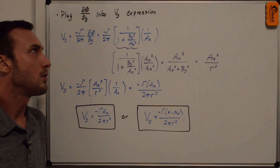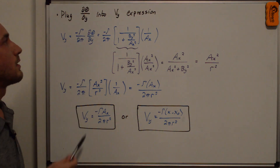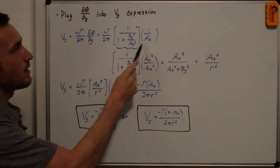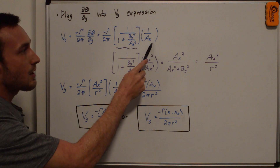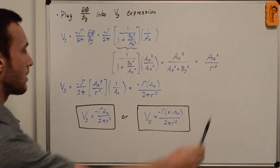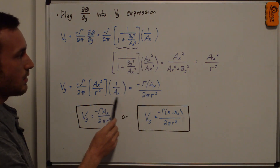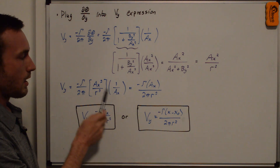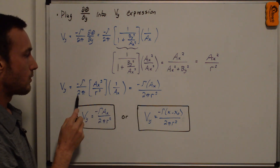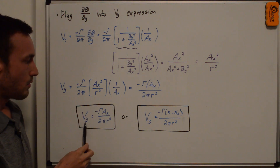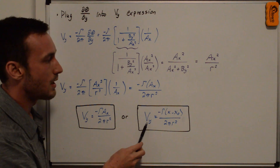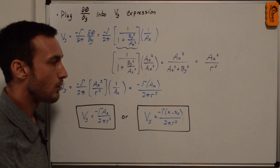Now we do the same to solve for vy by plugging in d(theta)/dy. We have negative gamma over 2 pi times d(theta)/dy. The only difference is that we have 1 over a_x here instead of negative b_y over a_x squared. This resolves down similarly to a_x squared over r squared, and after cancellation we get negative gamma times a_x all over 2 pi r squared. So vy equals negative gamma a_x over 2 pi r squared, or plugging in for a_x, vy equals negative gamma times (x minus x_0) over 2 pi r squared.